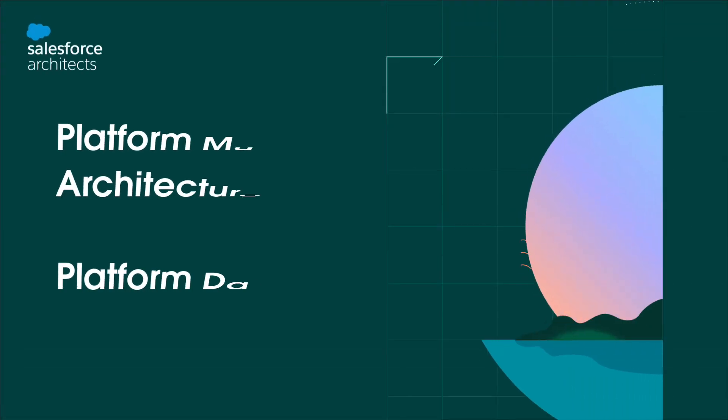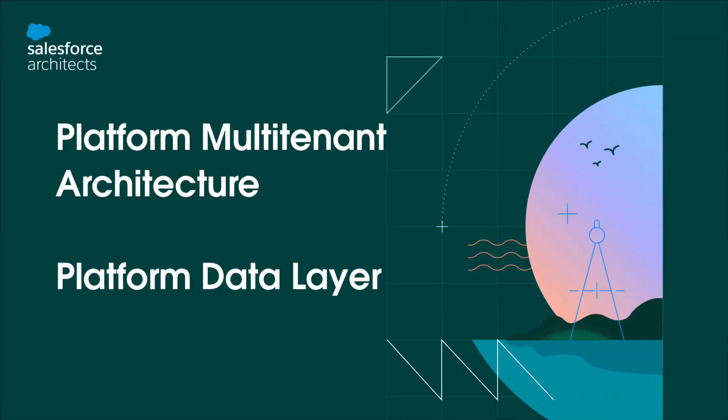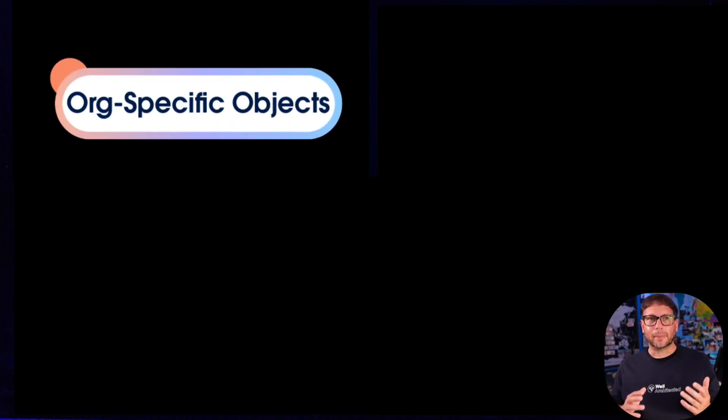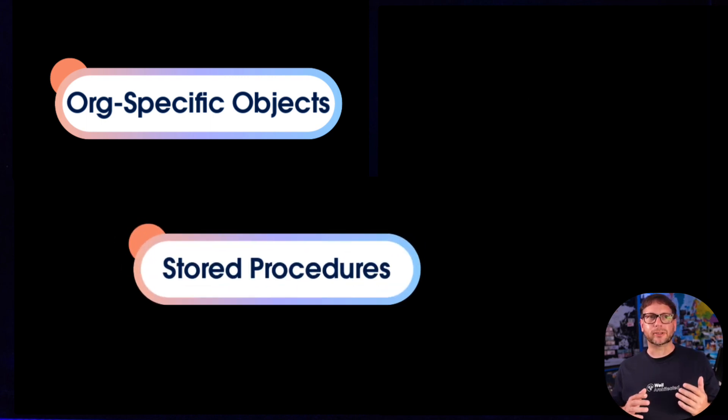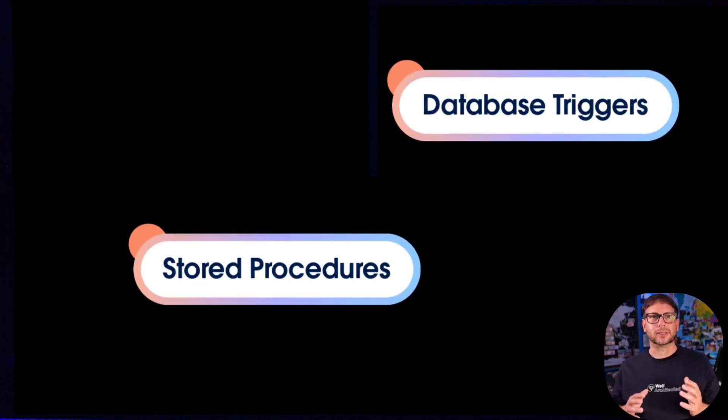When you create or customize an application, the platform stores related metadata in shared database tables that maintain metadata for all tenants. Things like org-specific objects, stored procedures, and database triggers are all virtual constructs described by metadata.